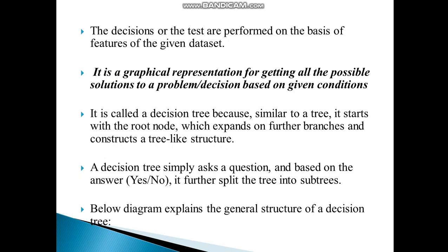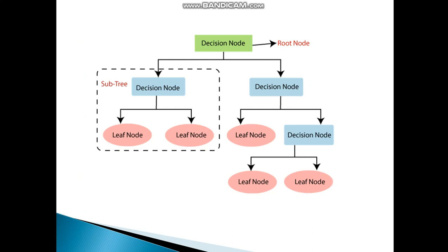The below diagram explains the general structure of the Decision Tree. First one is the Decision Node, which is subdivided into two: one is the sub-tree and another one is the Decision Node.